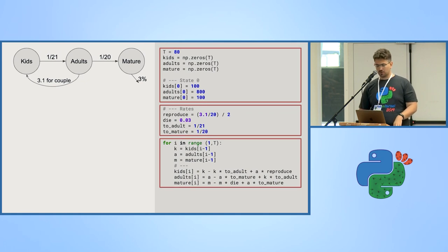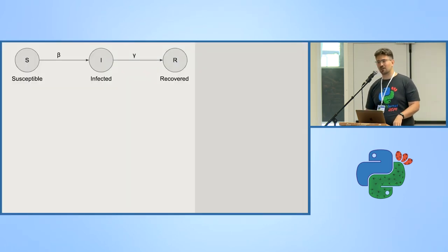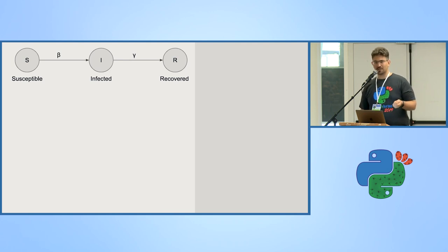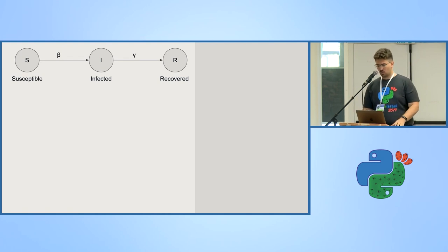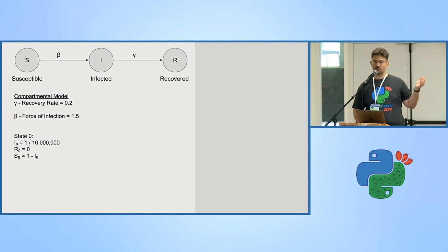Starting with 100 kids, 100 mature, and 800 adults, you can see in the first plot the total numbers — the birth rate is stronger than dying. In the share plot, even though you start with many adults, because reproduction is high but dying is hard, the adult population eventually becomes less than the mature and kid populations. I'm showing this because a disease model is basically the same thing — just with different names for the compartments.